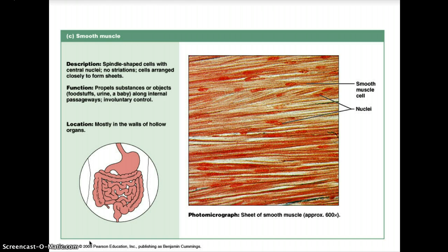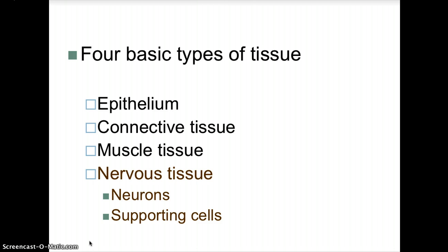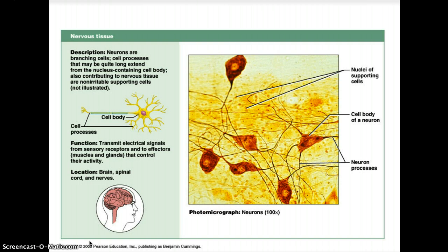Our last type of tissue is nervous tissue. It is found in the brain and spinal cord and contains specialized cells called neurons. Neurons are branching cells whose processes may be quite long, extending from a nucleus-containing cell body. Also contributing to nervous tissue are non-irritable supporting cells. The function of nervous tissue is to transmit electrical signals from sensory receptors to effectors — muscles and glands — that control their activity.